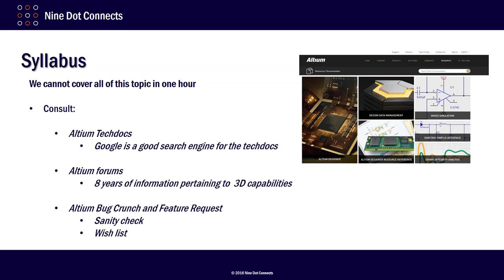Altium's forums — take a look at those as well. There's over eight years of information pertaining to the 3D capability. What projected Altium forward to become a tier one EDA tool is really its 3D capability, and even to this day I'm not sure other companies have fully caught up. In addition, there's also Altium's bug crunch and feature request pages. With the bug crunch, you can do a sanity check to see if other people are having a similar problem. And if a feature isn't working the way you think it should, you can check the feature request wish list.